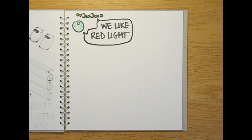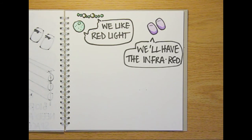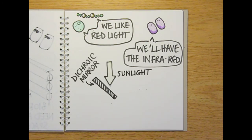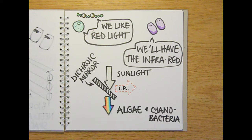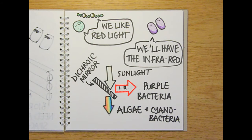Algae and cyanobacteria grow best under red light, while the purple bacteria do best under infrared light. So by using an optical device called a dichroic mirror, which reflects infrared light while allowing the rest of the spectrum through, the Birmingham researchers have been able to feed two bioreactors. The algae and cyanobacteria get the red light they need, and the purple bacteria get the infrared that they like.